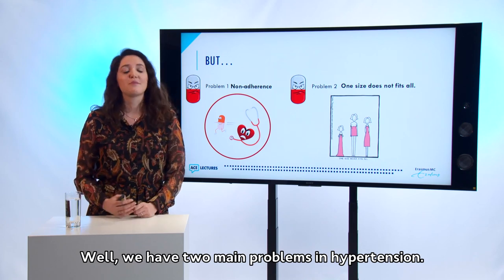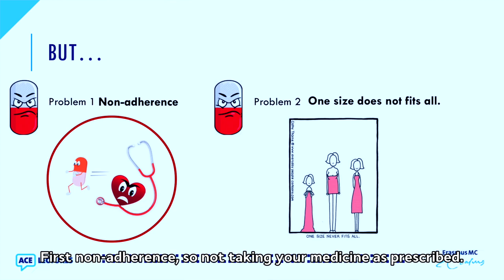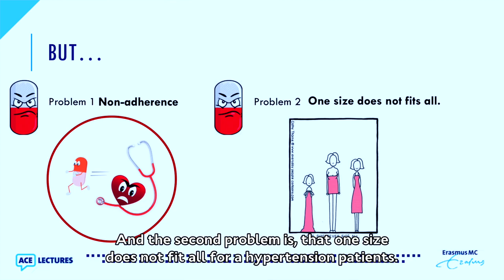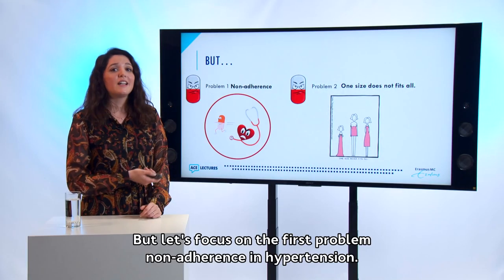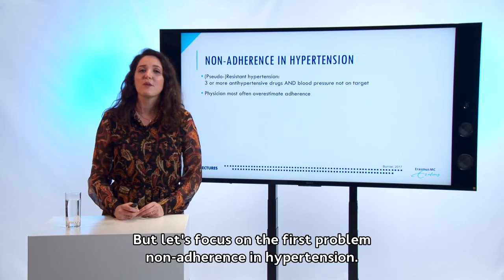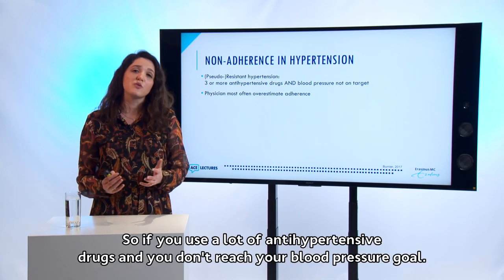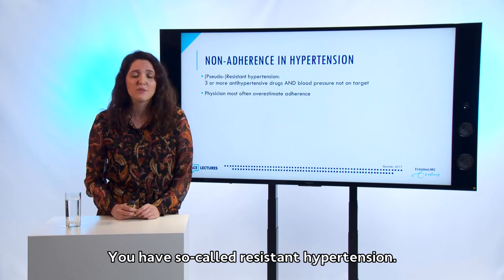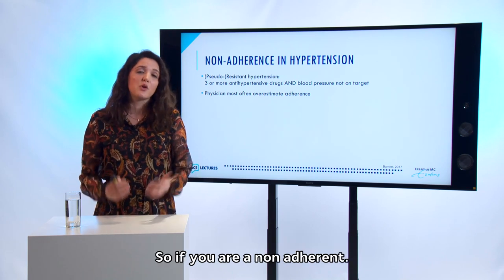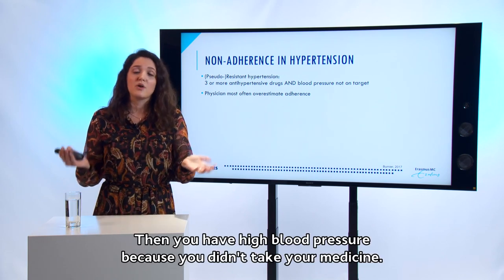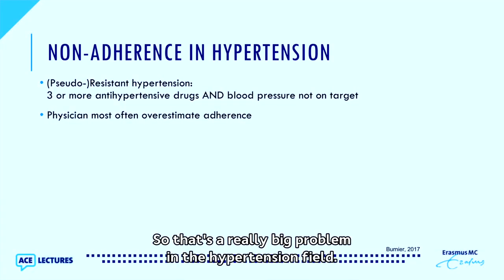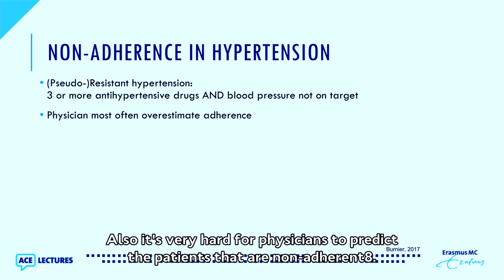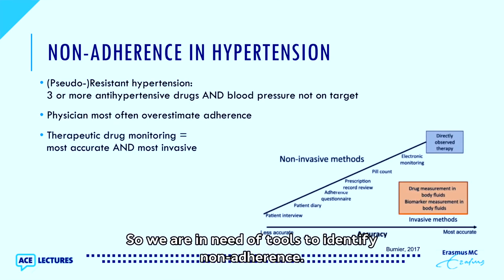We have two main problems in hypertension. First, non-adherence — not taking your medicine as prescribed. If you use many antihypertensive drugs but don't reach your blood pressure goal, you have resistant hypertension. But if you're non-adherent, you have high blood pressure simply because you didn't take your medicine — so-called pseudo-resistant hypertension. This is a really big problem, and it's very hard for physicians to predict which patients are non-adherent. We are in need of tools to identify non-adherence, and therapeutic drug monitoring is one of the best tools available.